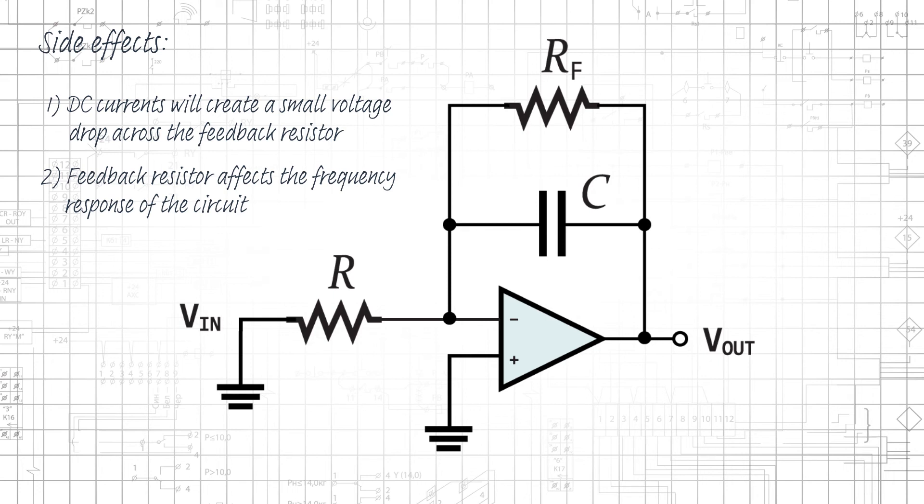And unfortunately, these two side effects react in opposing ways to the value of the feedback resistor. A smaller feedback resistance generates lower DC error voltage, but greater degradation of the frequency response. And a larger feedback resistance generates more DC error voltage, but less frequency response degradation.